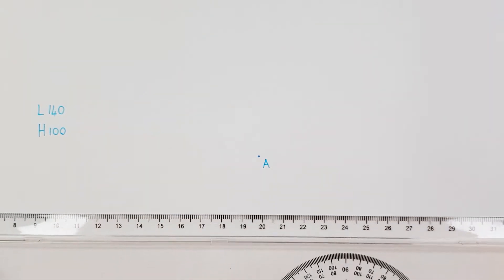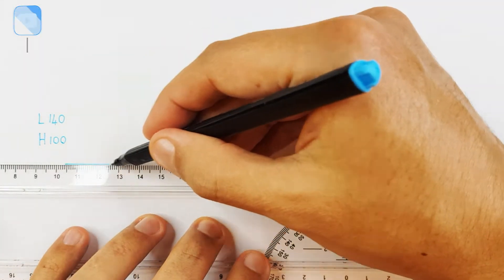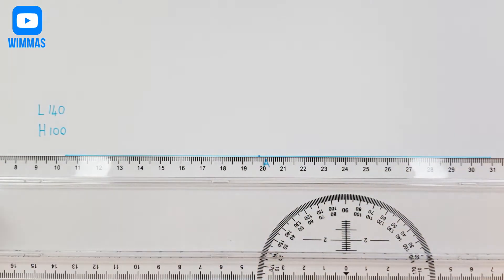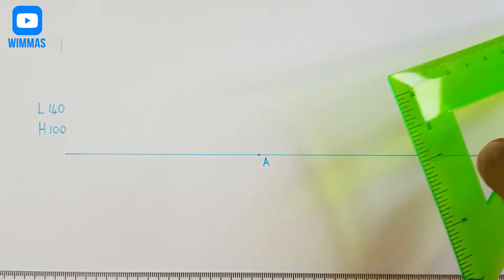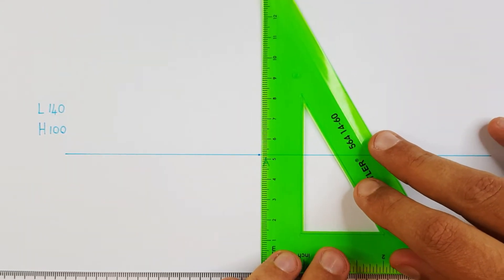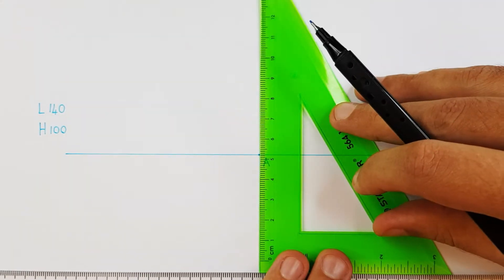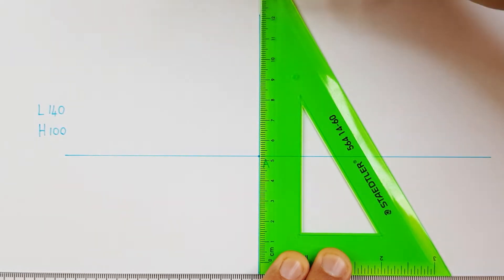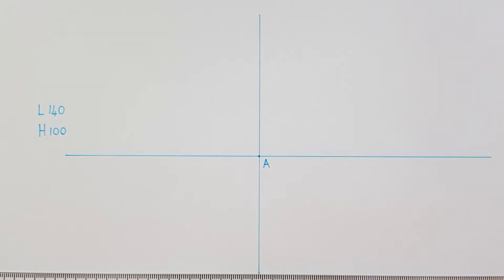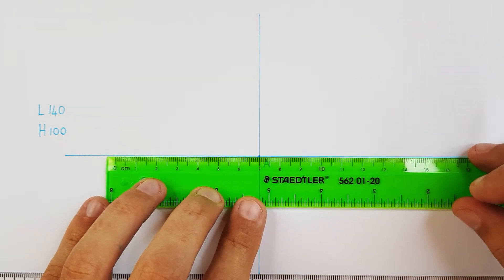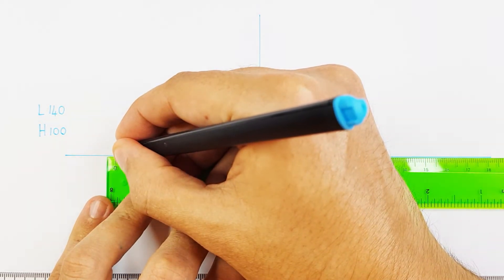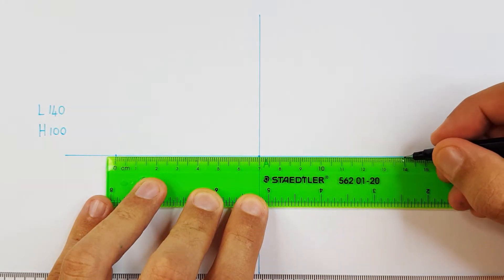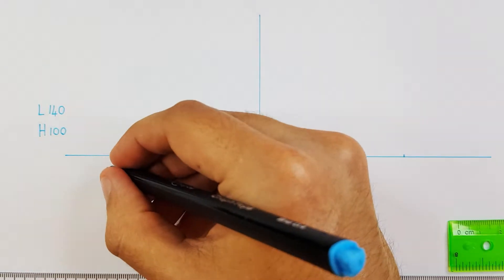So let's start off by drawing our two axes. To indicate my major axis I will use 70mm on both sides of point A. That will give me a total measurement of 140. I will label it as point B and C.